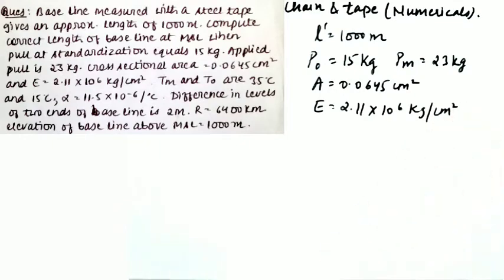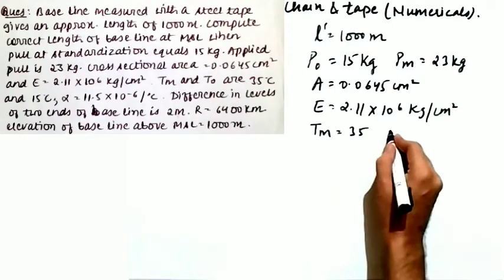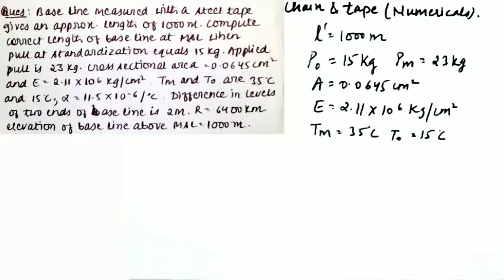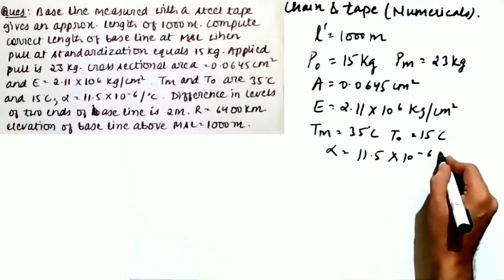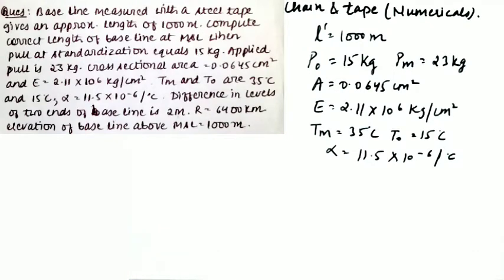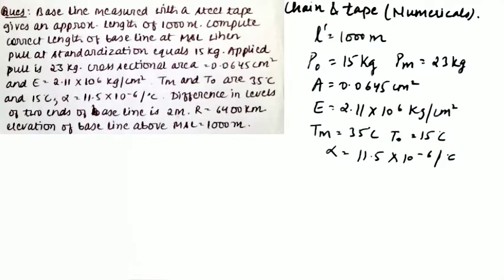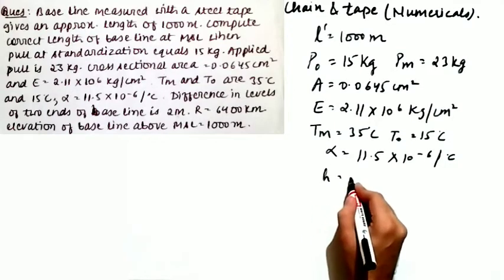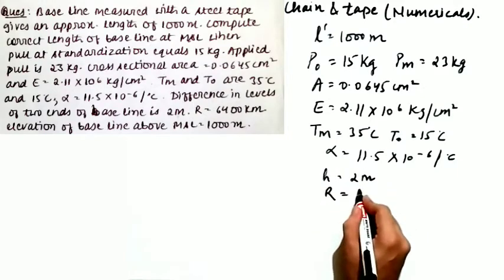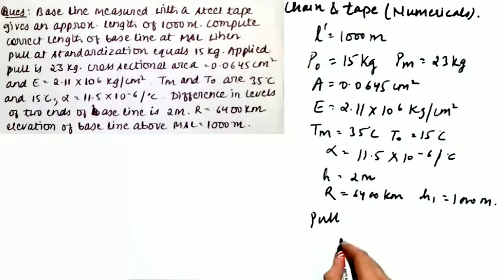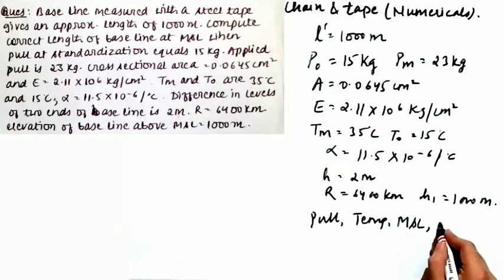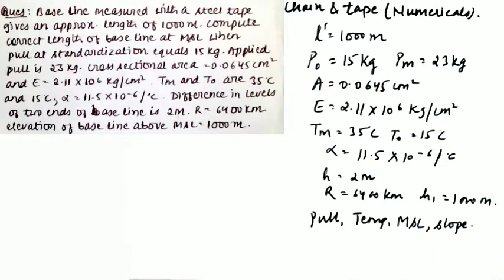You are also given: TM = 35°C, T₀ = 15°C, thermal coefficient of expansion α = 11.5 × 10⁻⁶ per degree Celsius. The difference in levels of the two ends H = 2 meters. The radius of curvature R = 6400 kilometers. The elevation of baseline above MSL, H1 = 1000 meters. Based on this data, the four corrections to apply are: pull correction, temperature correction, slope correction, and mean sea level correction.